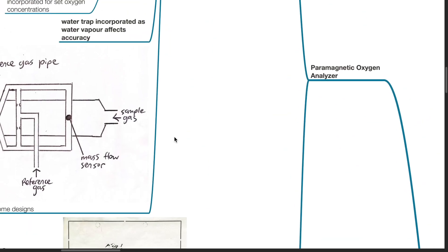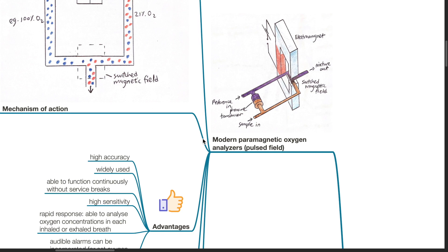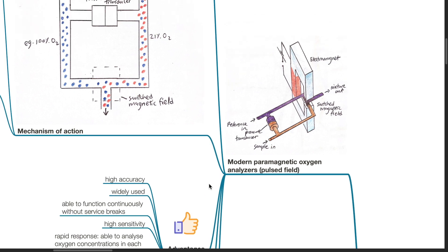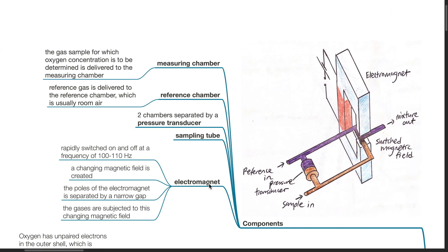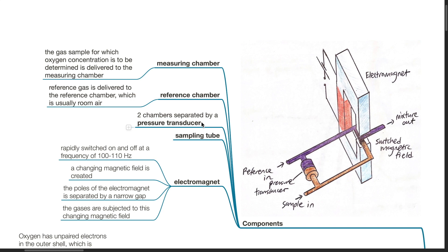The modern paramagnetic oxygen analyzer has components including a measuring chamber, reference chamber, pressure transducer, sampling tube, and electromagnet. The gas sample for which oxygen concentration is to be determined is delivered to the measuring chamber, while the reference gas — usually room air — is delivered to the reference chamber. The two chambers are separated by a pressure transducer.